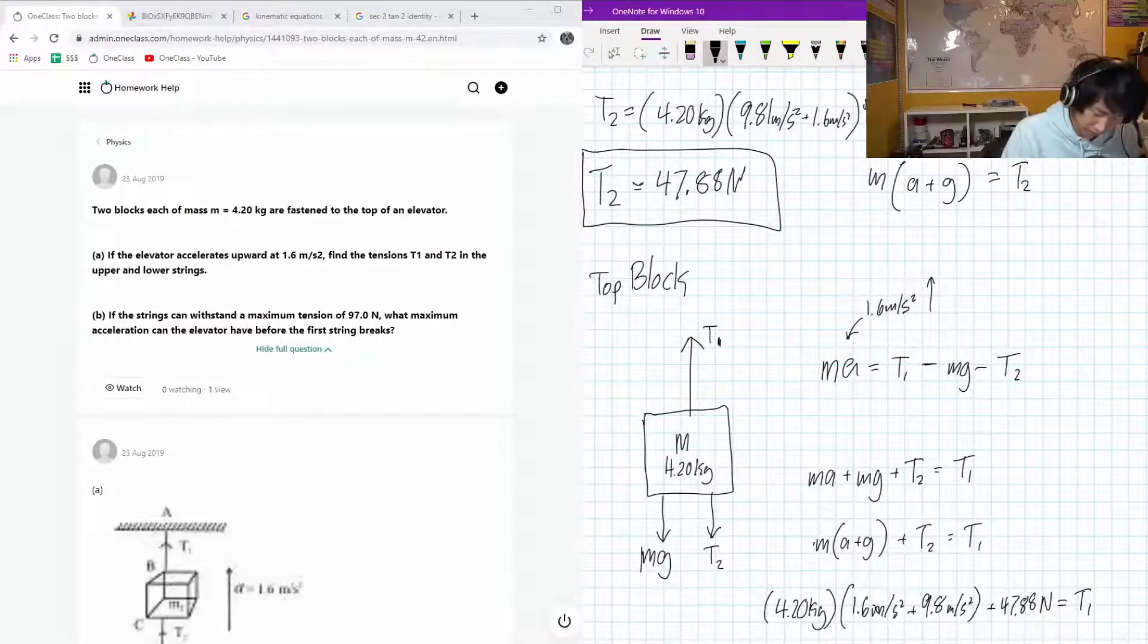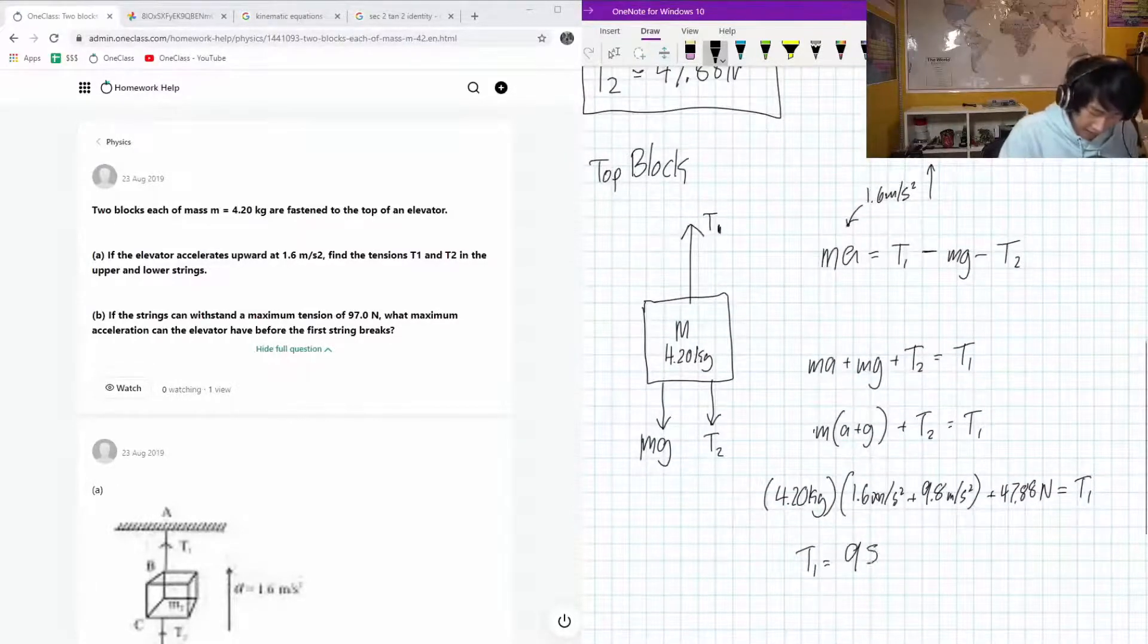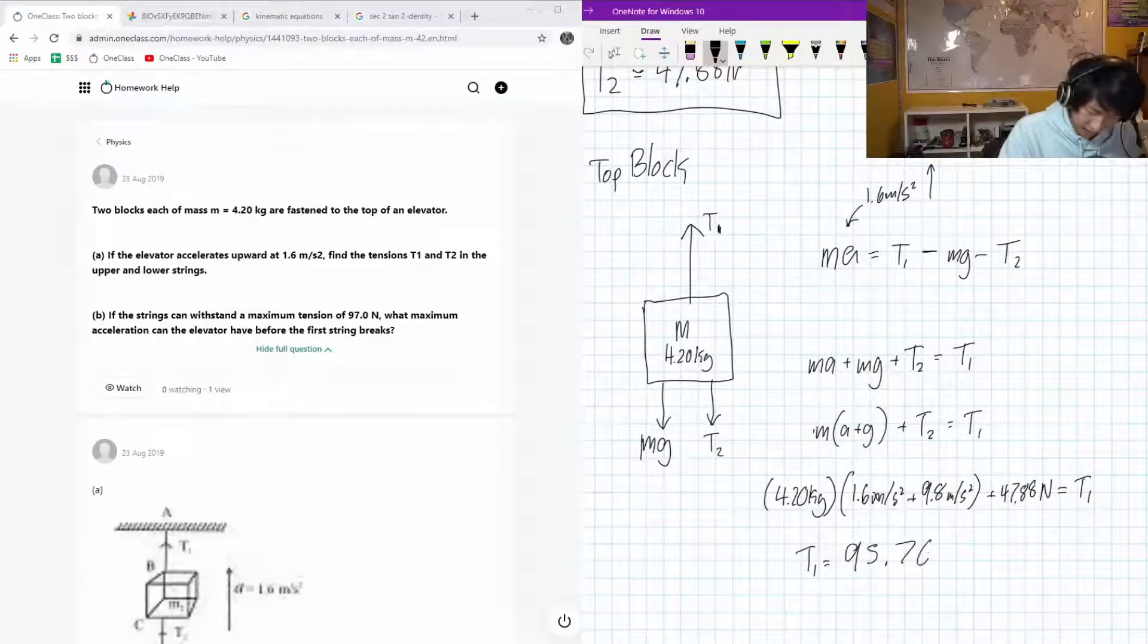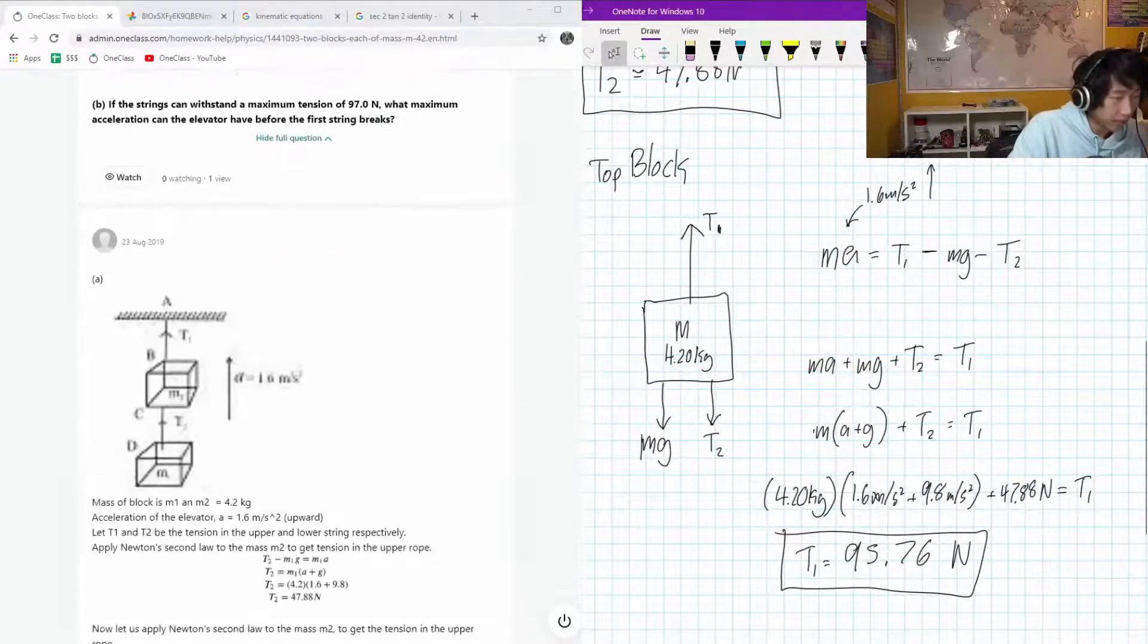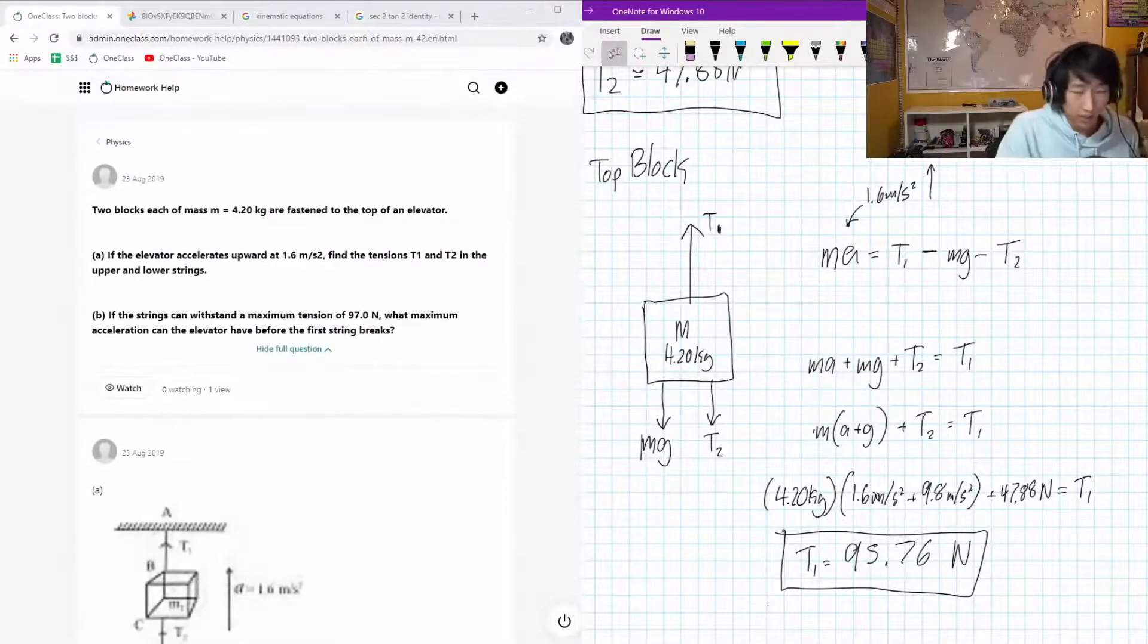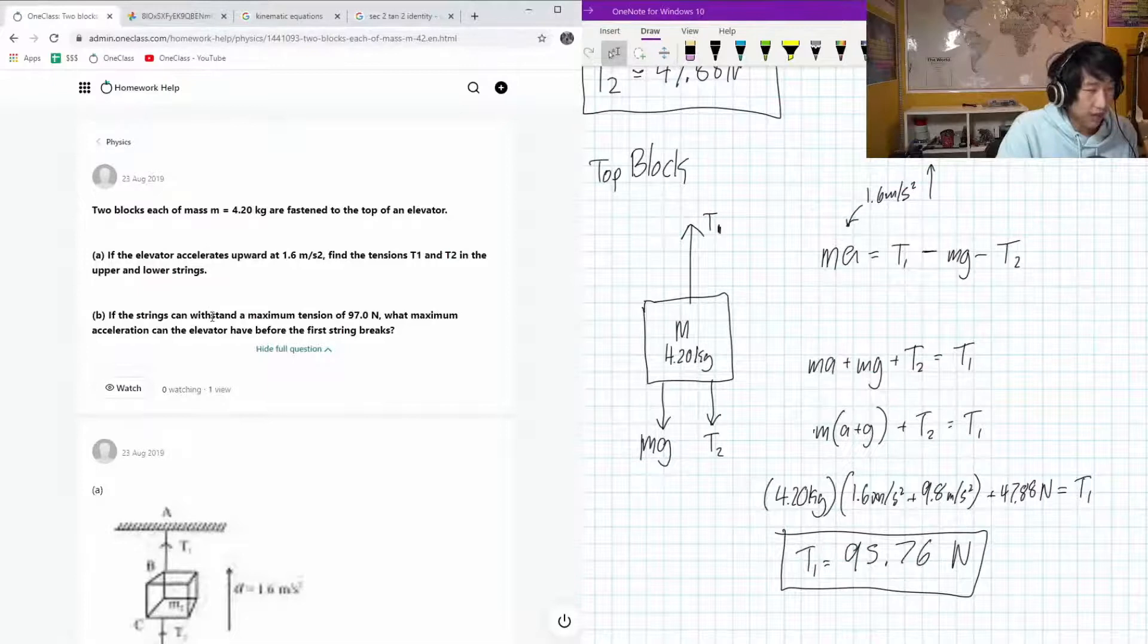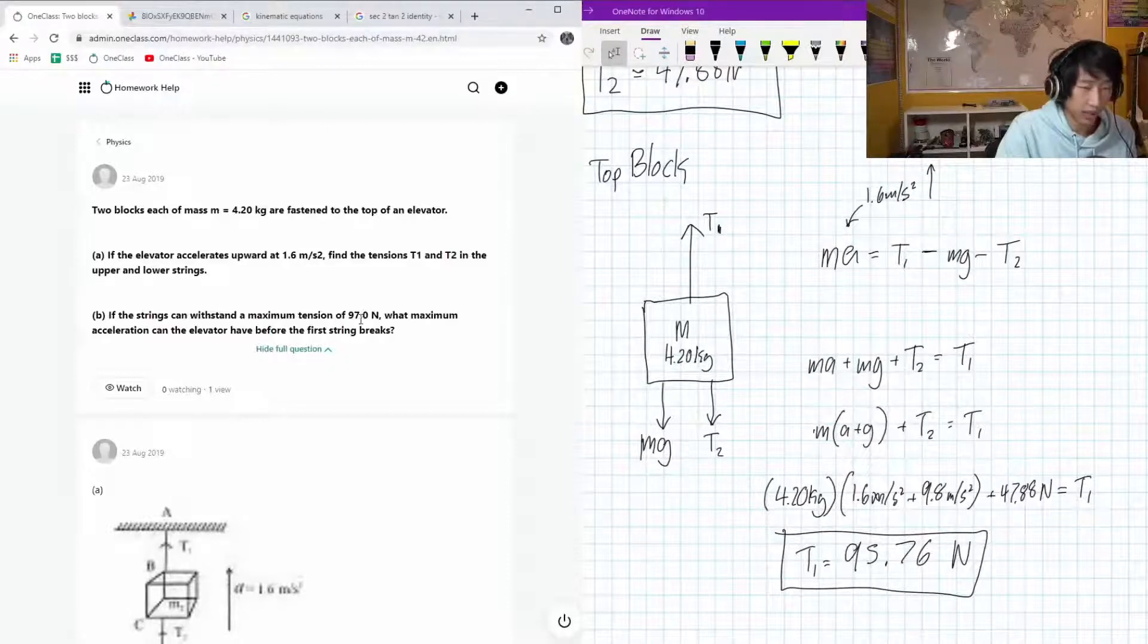So it actually seems pretty reasonable to me that it would just be perfectly double. So this is going to be T1, 95.76 newtons. Okay, so that's going to be the T1 tension. Hopefully we have a similar calculation here. Precisely the same. Awesome. Okay, so now let's look at part B. So if the strings can withstand a maximum of 97 newtons, what is the maximum acceleration before the first string breaks?